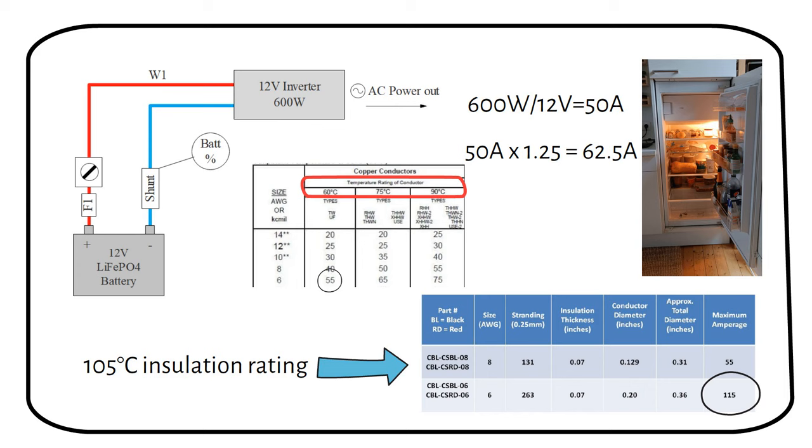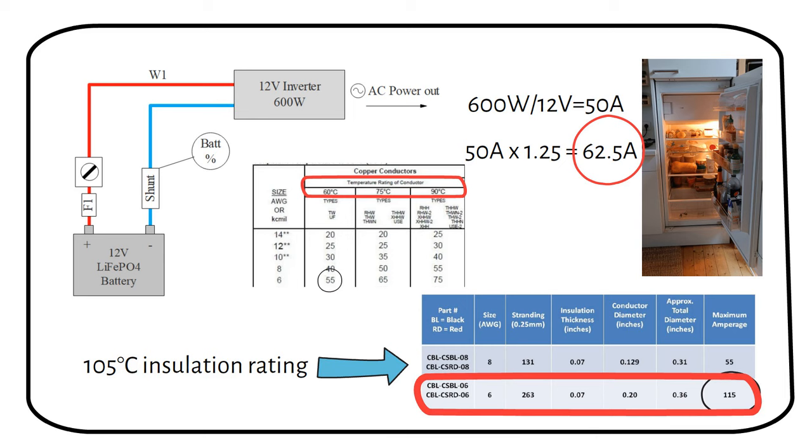Do you remember that we needed to use a wire rated at a minimum of 62.5 amps? We can see that we can use a 6 gauge cable because 62.5 amps is smaller than the maximum allowable current of 115 amps. An 8 gauge cable will be too small because it can only carry 55 amps. And that's how easy it is to size a wire.